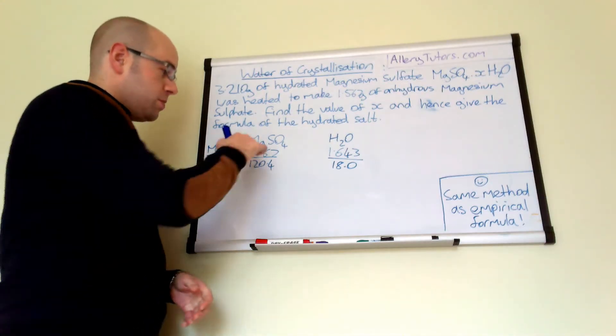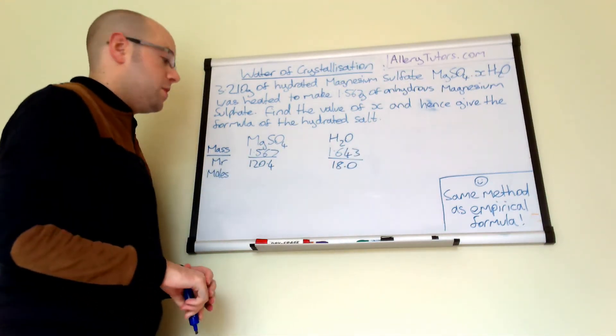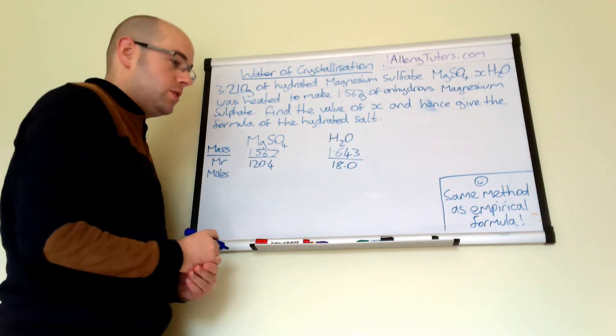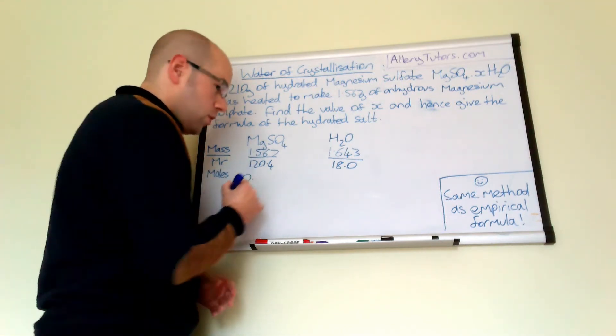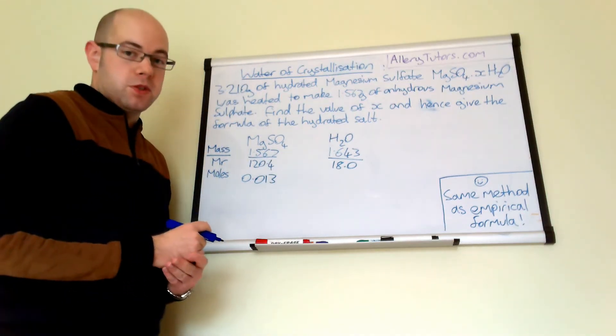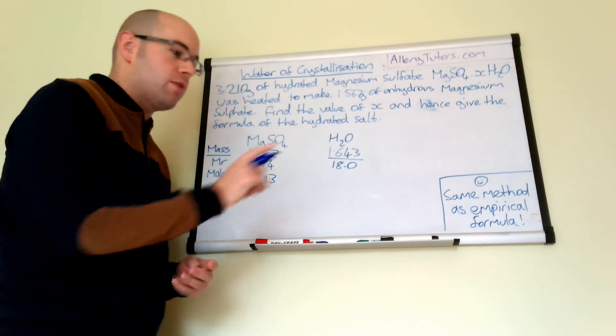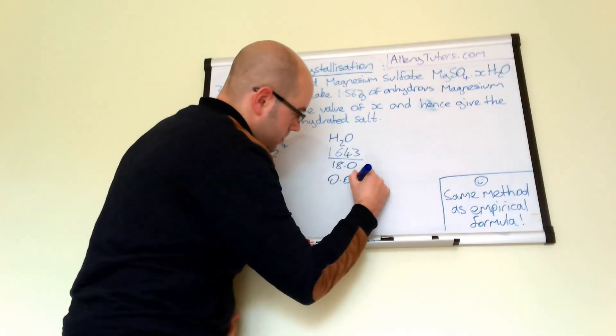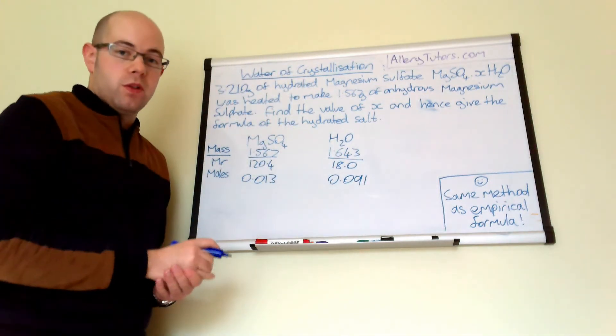And then all you do is you put them in your calculator just like as if you were doing empirical formula and work out your moles. So you should find that you should have 0.013 moles of magnesium sulfate. And you should have 0.091 number of moles of water.